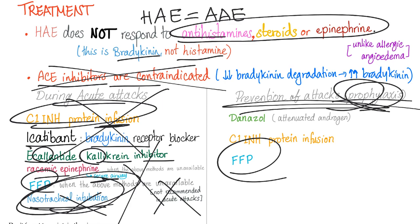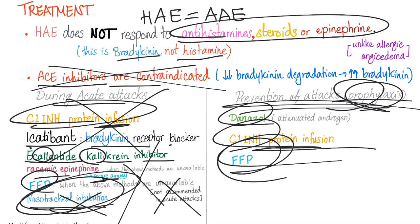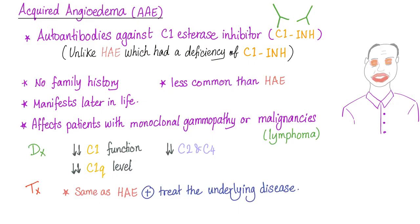For prevention and prophylaxis of future attacks: danazol, C1 inhibitor protein infusion, and fresh frozen plasma — because fresh frozen plasma contains the missing C1 inhibitor. Fresh frozen plasma is not recommended during acute attacks; keep it for prophylaxis.